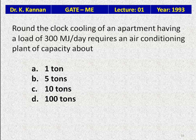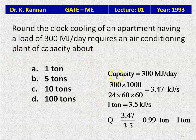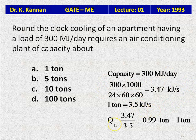Question 18: Round-the-clock cooling of an apartment with a load of 300 MJ/day requires an air conditioning plant of capacity about — 1 ton, 5 tons, 10 tons, or 100 tons. Capacity = 300,000 kJ/day ÷ (24 × 60 × 60) = 3.47 kJ/s. Since 1 ton of refrigeration = 3.5 kJ/s, capacity = 3.47/3.5 ≈ 0.99 tons ≈ 1 ton. The answer is 1 ton.